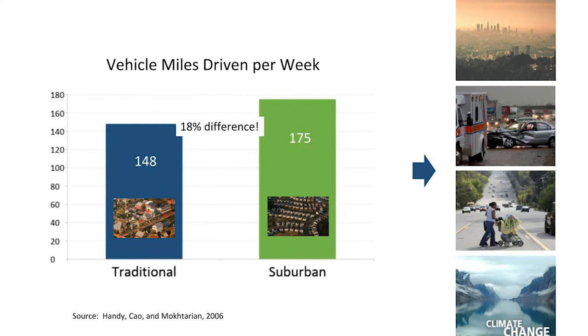Some of our own research shows that neighborhoods built according to these principles — which tend to be the pre-World War II older neighborhoods we have in this country — the people living in those neighborhoods actually do drive quite a bit less than people living in more conventional suburban areas that are much more dependent on the car. And of course that's important because of the environmental, economic, social, and public health impacts that all of our driving has.